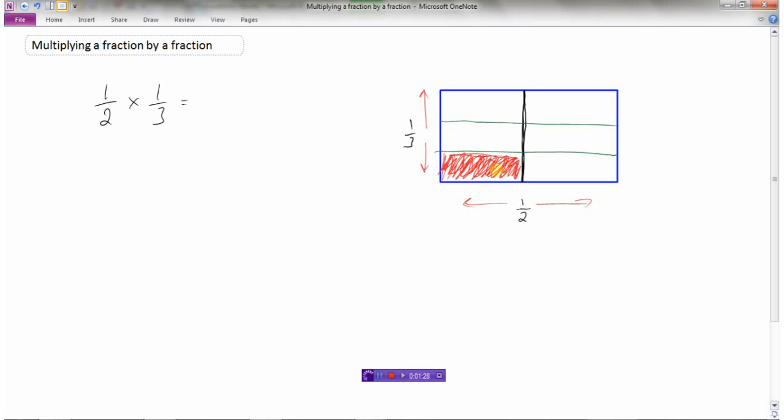And now what you can quickly see is there are one, two, three, four, five, six regions to my rectangle, and I have shaded one of them. So one-half times one-third, or one-half by one-third, for this rectangle is one-sixth. I have one-sixth of the area of the rectangle shaded.